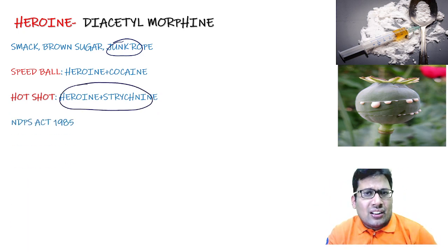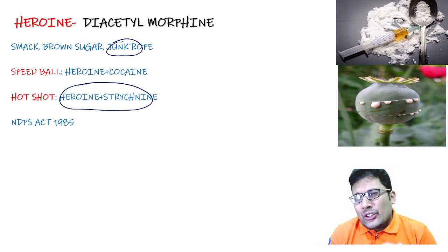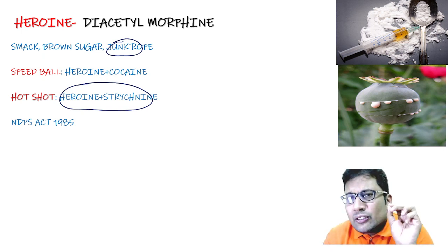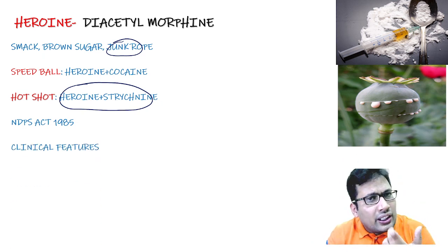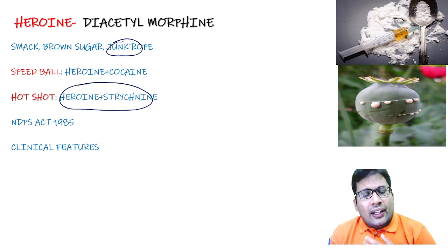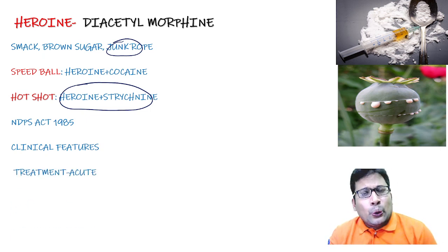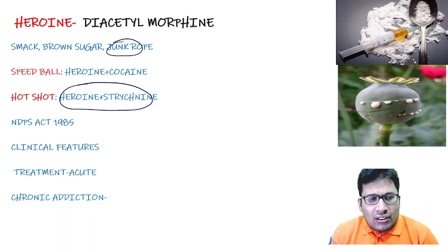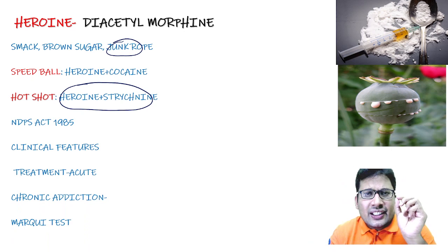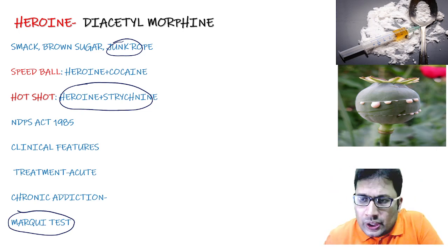NDPS Act (Narcotic Drugs and Psychotropic Substances Act, 1985): cultivation, storage, consumption, and transport are all punishable offences. Treatment for acute opiate poisoning: naloxone, naltrexone, or nalmephene. For chronic addiction: methadone. The Marquis test is used for detection in opium poisoning.